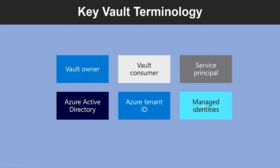Then we have Managed Identities — these are assigned identities for an Azure resource, and this is the fastest way to access the vault from a service without sharing or exposing credentials. Service Principal can provide a certificate or secret, which is not recommended as it's difficult to rotate.